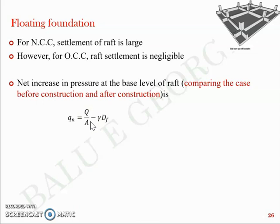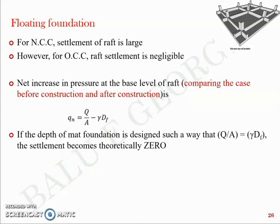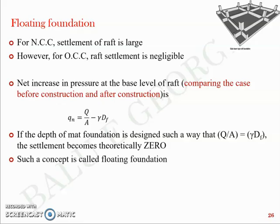The floating foundation idea is quite simple. If a raft foundation is designed so that it is placed at a depth — for instance, 6.56 meters in the previous question — such that the net pressure Q_N equals zero, then it is called a floating foundation. In short, if the depth of the mat foundation is designed so that Q/A equals γ·DF, then settlement is theoretically zero because there is no net increase in pressure, and hence no settlement is expected.